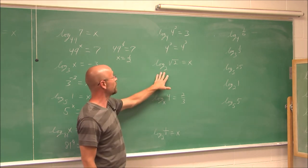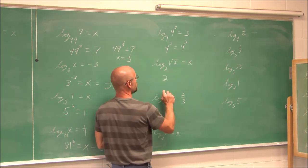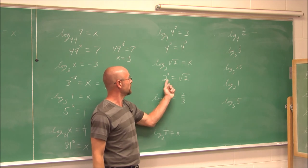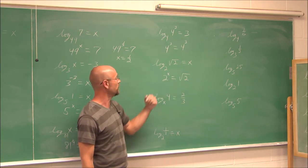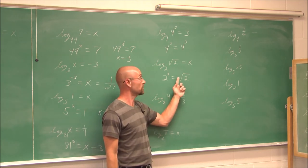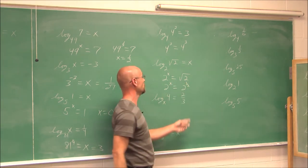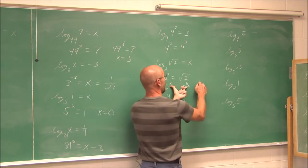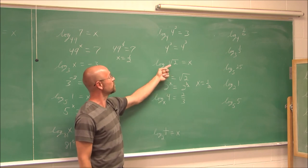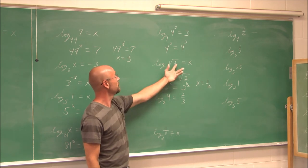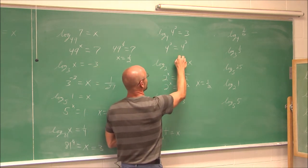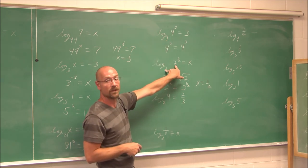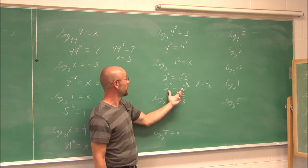Let's look at log base 2 of the square root of 2 equals x. In exponential form: 2 to the x equals the square root of 2. We write the radical as a rational exponent: the square root of 2 is 2 to the 1/2. Now their bases are the same, so their powers must be equal. x equals 1/2. Whenever you see a radical in an equation, write it as a fractional exponent, and then reduce just like this.